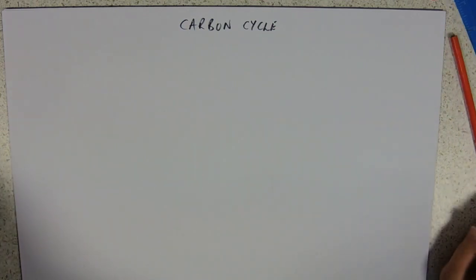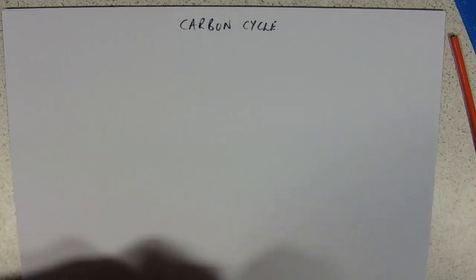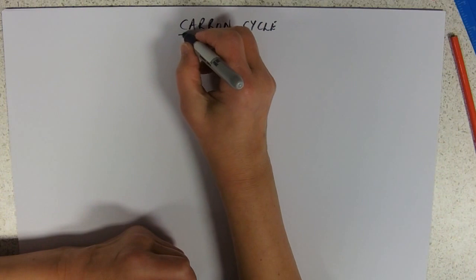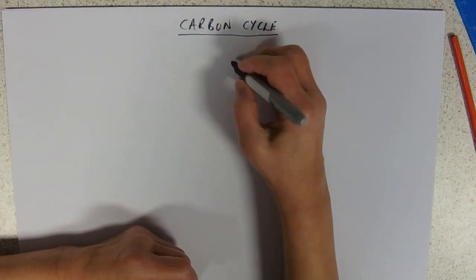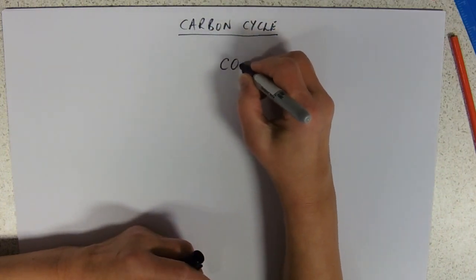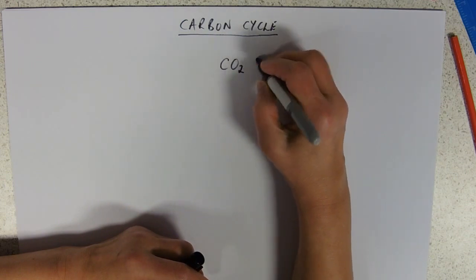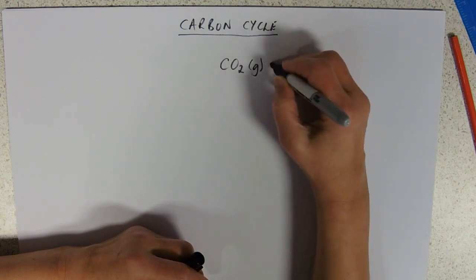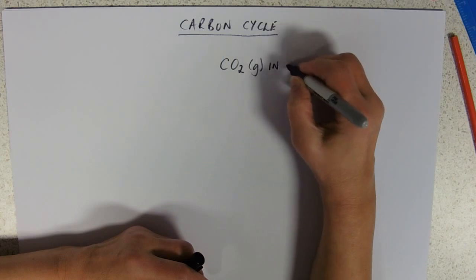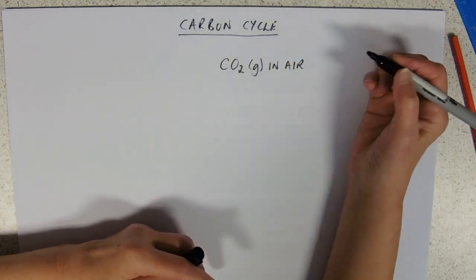So, carbon cycle is by far the easiest of the two cycles because you don't need to know the names of any of the bacteria involved unlike the nitrogen cycle where you do. So, you need to know that the form in which carbon is in its inorganic form is carbon dioxide gas in air.